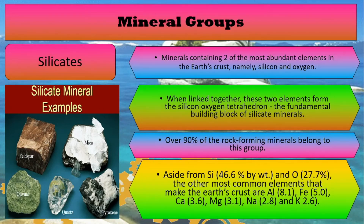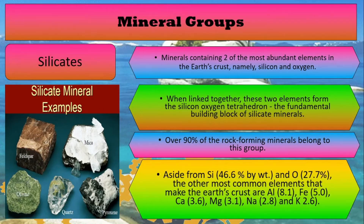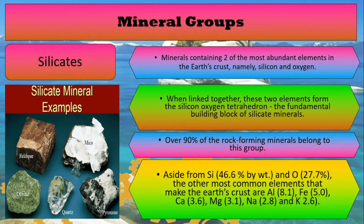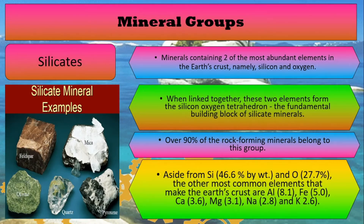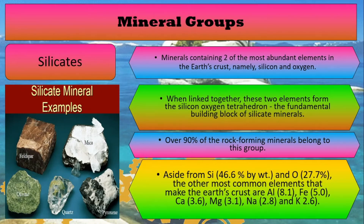Aside from silicon and oxygen, other common elements that make up the Earth's crust include aluminum, iron, calcium, magnesium, sodium, and potassium.